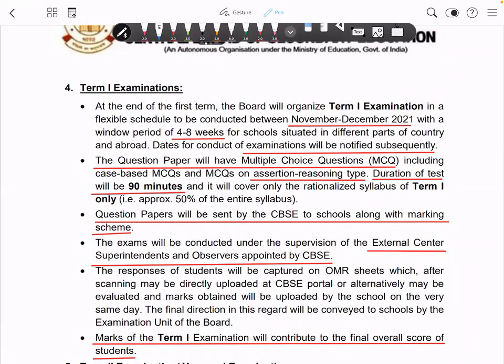It will be assertion and reason type questions. There are 4 options: Assertion 1 — Statement 1 is correct, Statement 2 is correct, and Statement 2 is the correct explanation of Statement 1. Assertion 2 — both statements are correct but Statement 2 is NOT the correct explanation of Statement 1. Assertion 3 — Statement 1 is correct, Statement 2 is wrong.